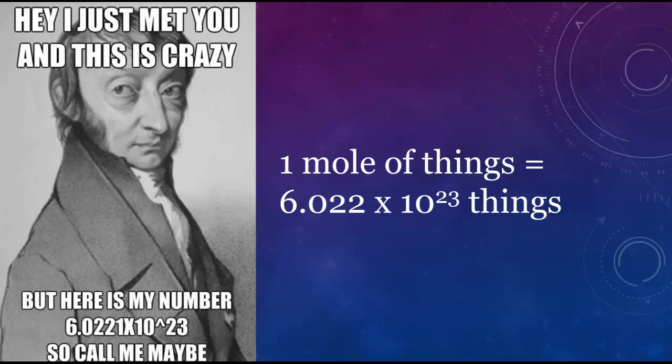That number is known as Avogadro's number, even though he wasn't the guy that calculated it. I've defined a mole here as a number of things because you could theoretically have a mole of anything. Although a mole of grains of sand is more sand than exists on this planet, so you can really only practically have a mole of things that are too small to see.